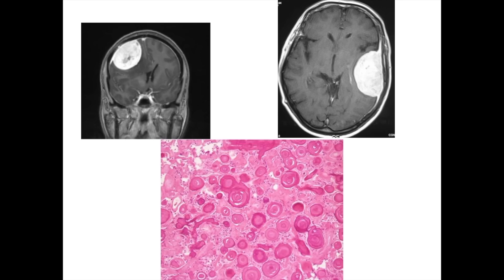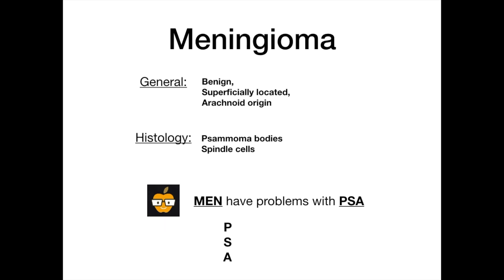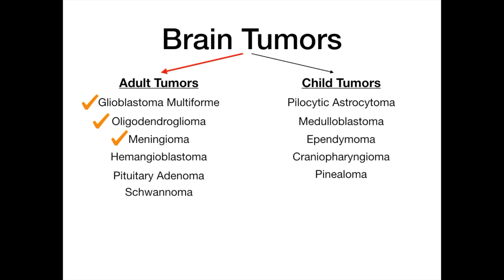To remember meningiomas, use: 'men have problems with PSA.' Men for meningioma — the first three letters of the tumor. PSA is the mnemonic: P for psammoma bodies, S for spindle cells, and A for arachnoid origin. If they ask a question about meningiomas that's not one of these three things, it's not worth the brain space to memorize. That's everything that's very high yield.